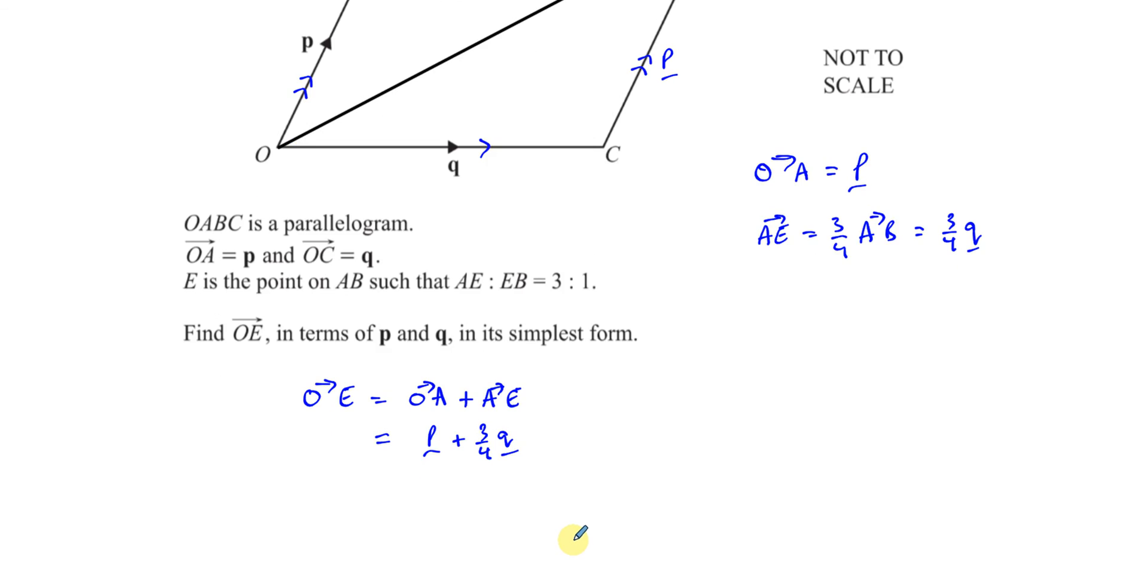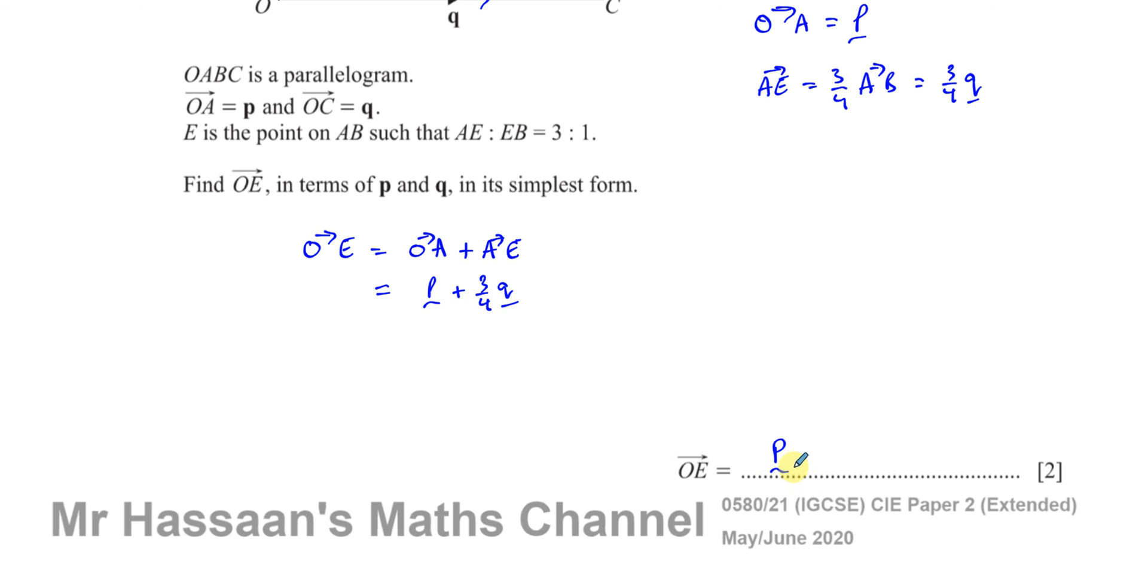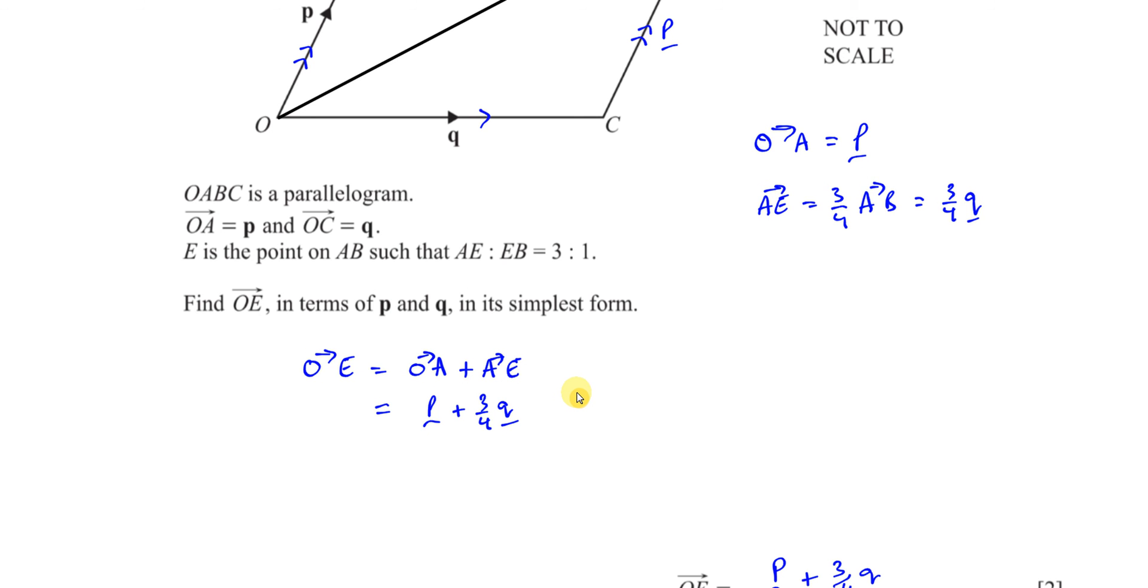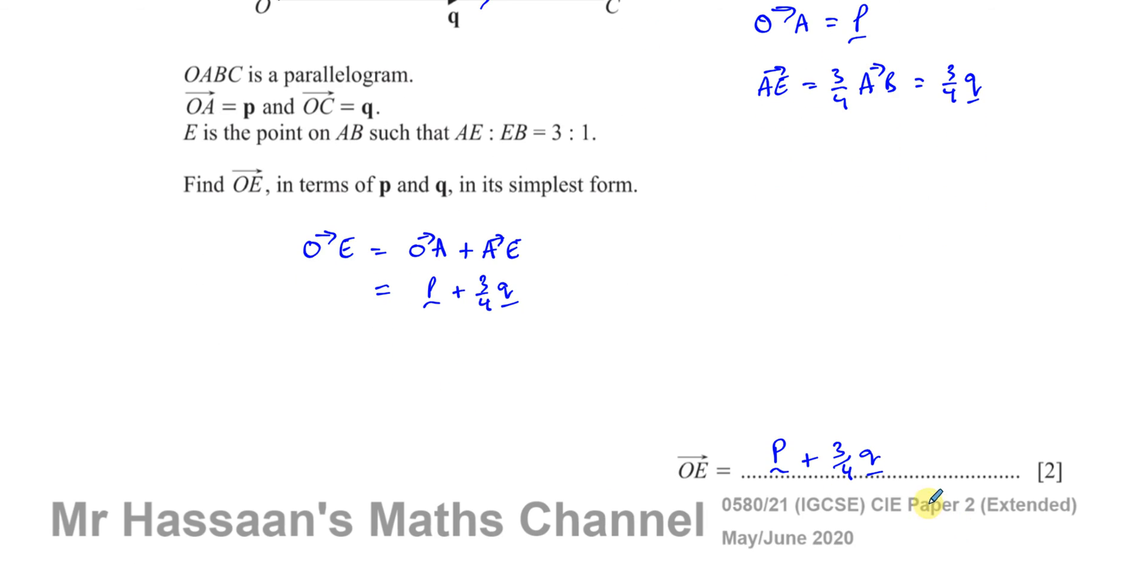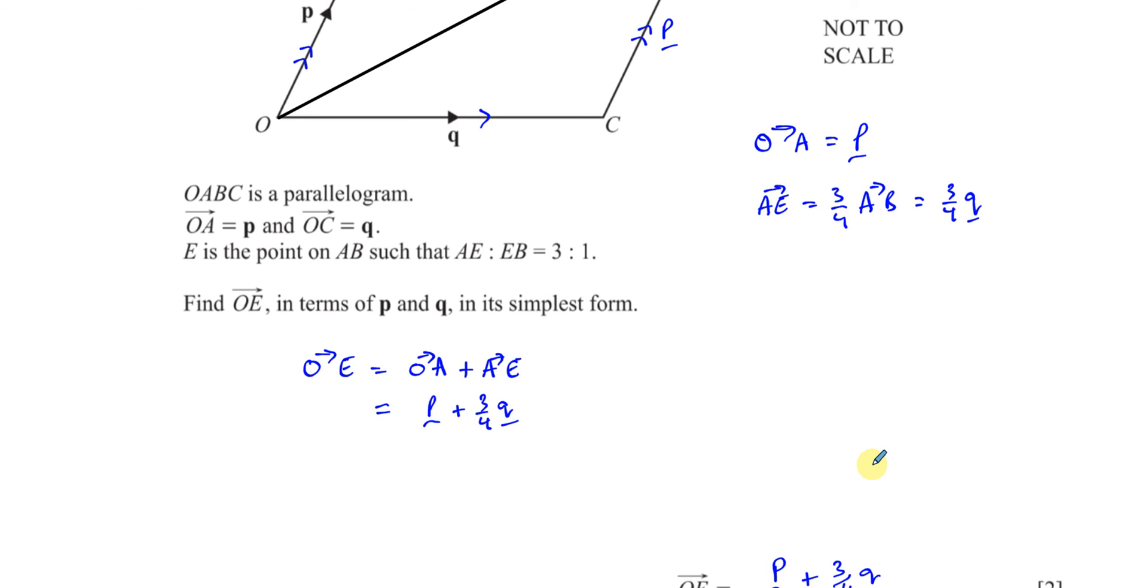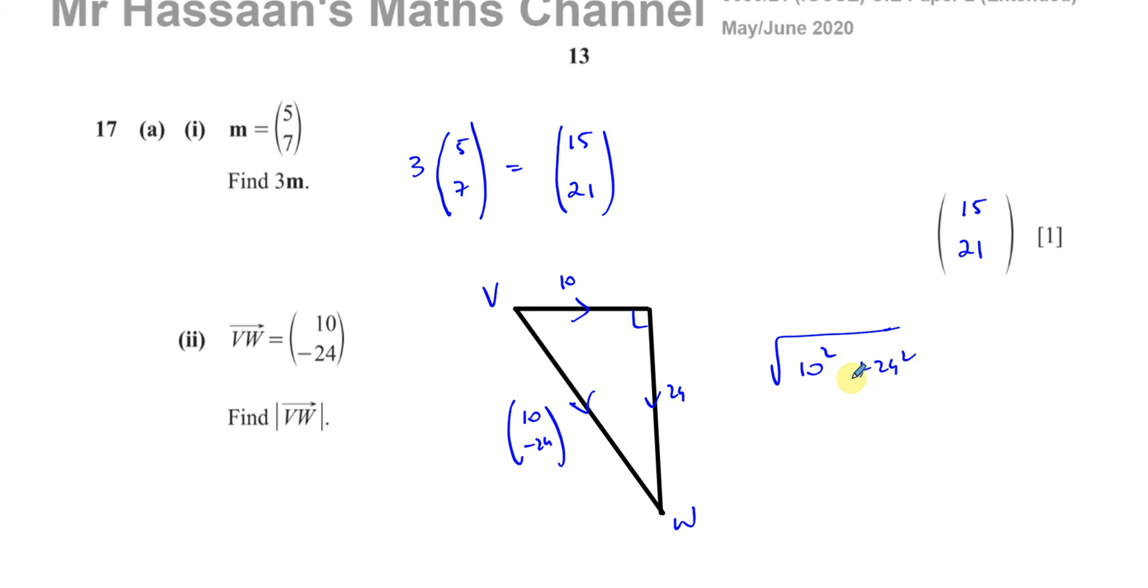And we have our answer, which we should write in our answer space, P plus 3 quarters Q. You should underline your vectors. In print, they're in bold type, and when you write them by hand, you should underline them, that's the right format to write them in. So that answers this question number 17.